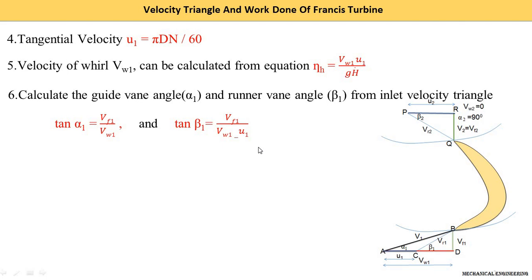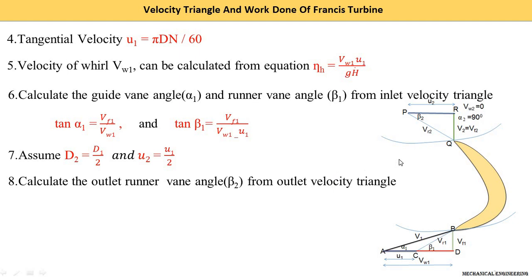We assume D2 = D1/2 and U2 = U1/2, meaning the velocity of the blade at outlet is half the velocity of the vane at inlet. Next, calculate the outlet runner vane angle beta 2 from the outlet velocity triangle using triangle PQR: tan(beta 2) = VF2 (or V2) divided by U2. Thank you for watching this video. If you learned something, please like the video, subscribe the channel, and share with your friends.